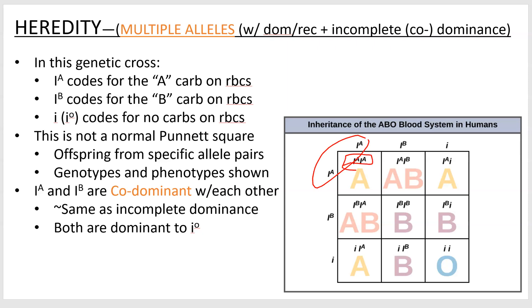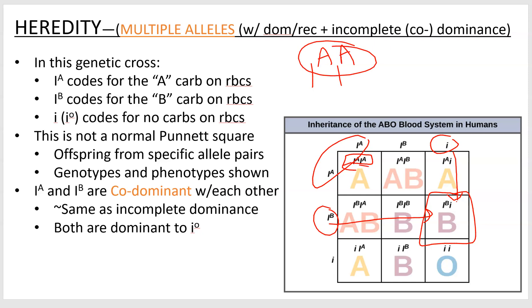This diagram on the right simply represents all the different combinations possible. For example, I-A and I-A result in I-A I-A offspring. It's easy to predict: I-A I-A is going to be type A blood. That's the phenotype — type A blood — with genotype I-A I-A. But if you have I-B and I-O, giving genotype I-B I-O, why is it B blood type and not BO?